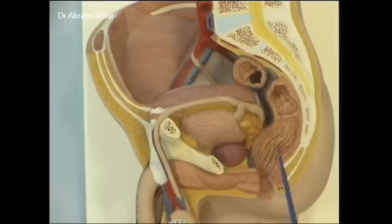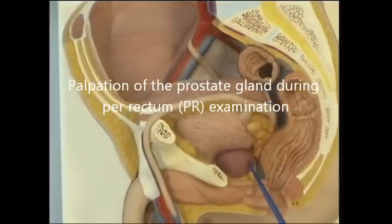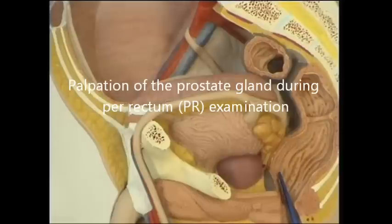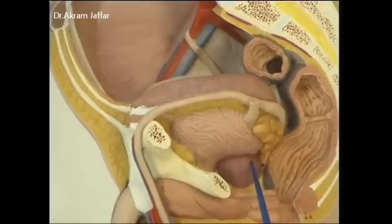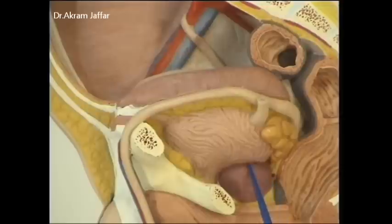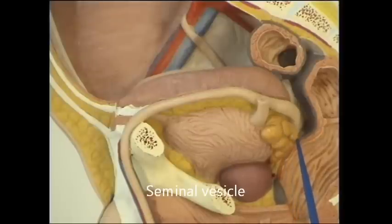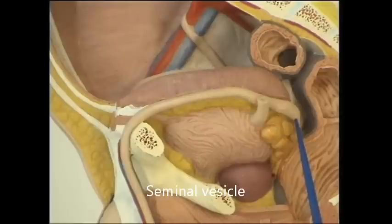In front of the rectum is the prostate gland. You can appreciate how the prostate gland can be felt through PR examination. The prostate gland has the size and shape of a chestnut and is related to the neck of the urinary bladder. Just above that are the seminal vesicles. This is one of the seminal vesicles, and here this is the vas or the ductus deferens.